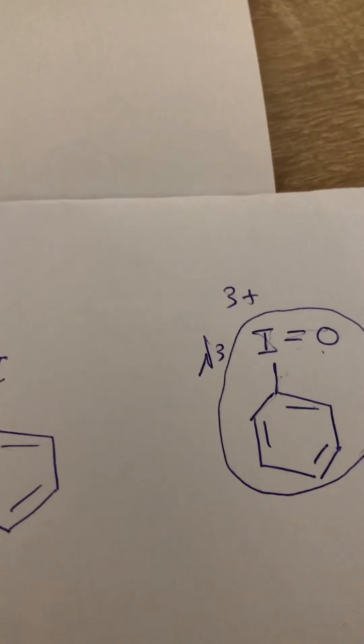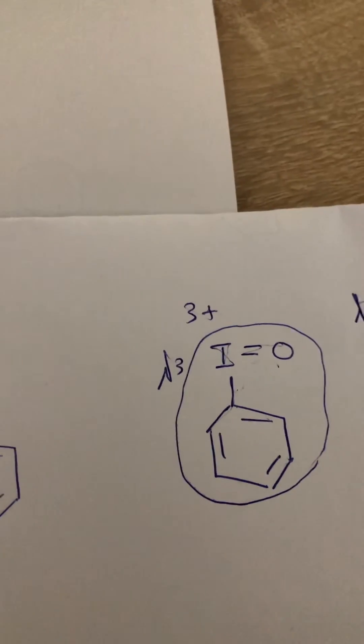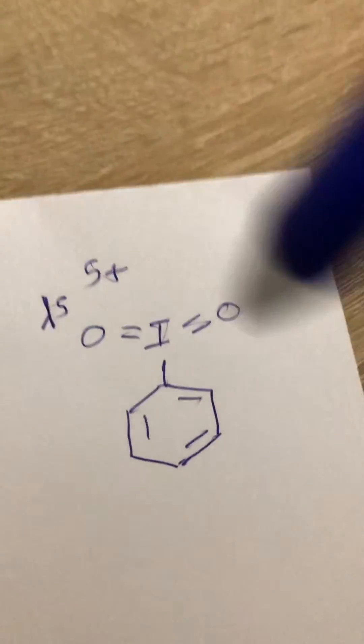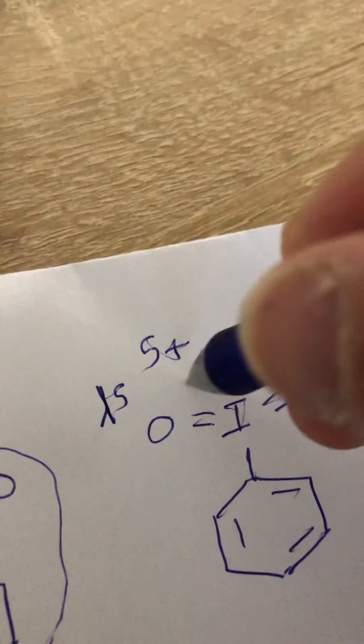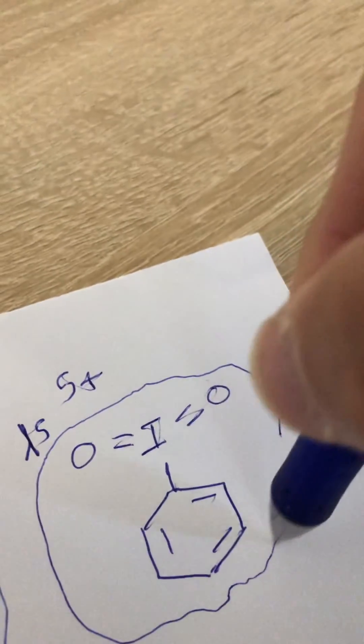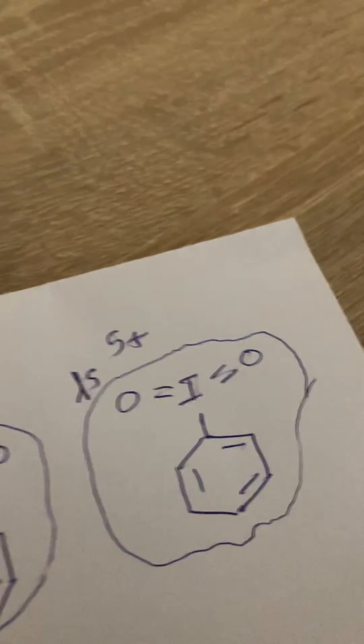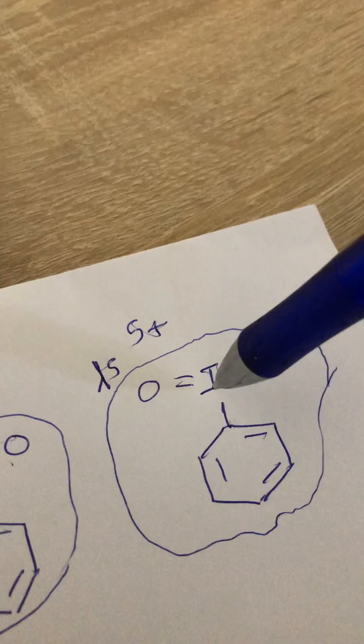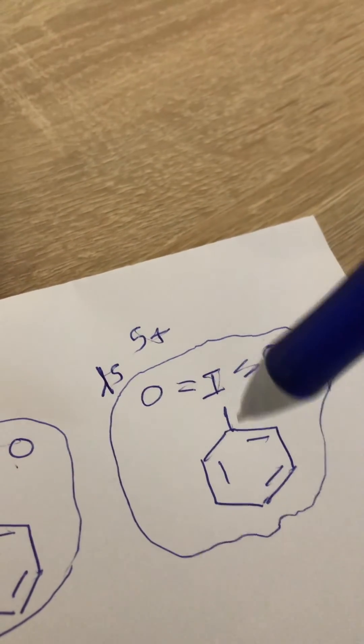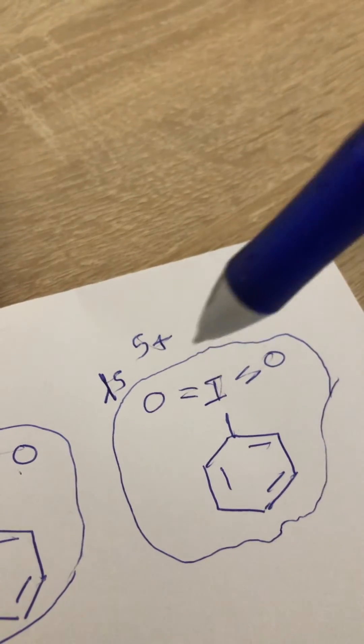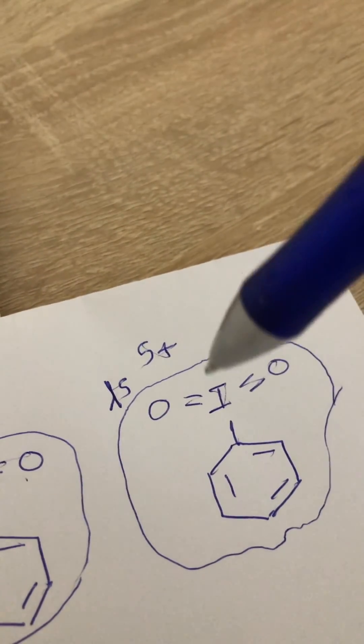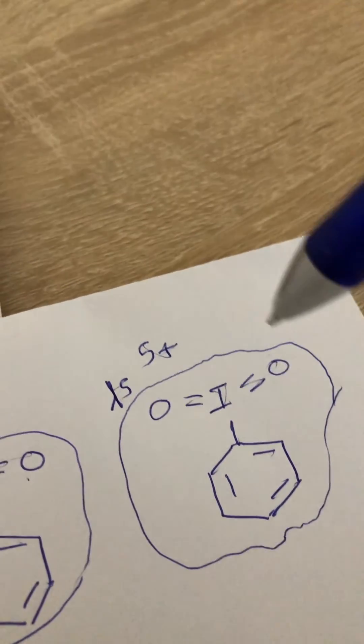The other example is this compound where the iodine can make five bonds: the first bond with benzene, those two with this oxygen, and the other two with the other oxygen. So the iodine makes five bonds.